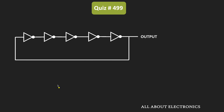This ring oscillator is operating at 1 GHz. As we have seen in the earlier video on ring oscillators, for an n-stage ring oscillator, its oscillation frequency can be given by this expression: f = 1 divided by 2N times Tp. Where N is the number of stages in the ring oscillator, and Tp is the propagation delay of each inverter.